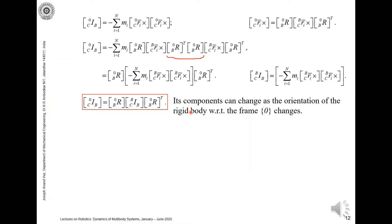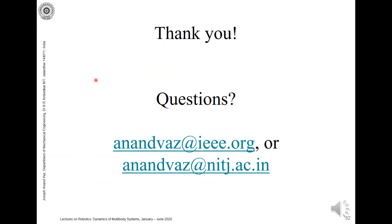Therefore, the inertia tensor of body B with respect to the center of mass expressed in frame 0 can be related to the inertia tensor of body B with respect to the center of mass expressed in body frame b using this transformation: pre-multiply by the orientation matrix from b to 0 and post-multiply by its transpose. The components of the body-frame inertia tensor do not change, but what changes is the orientation — the R matrices change as the body frame's orientation with respect to frame 0 changes, and hence the inertia tensor expressed in the inertial frame 0 changes. This is how inertia tensors in different frames are related.